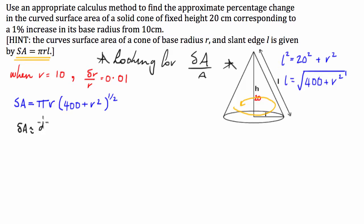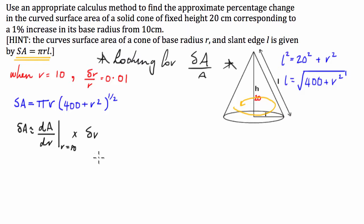Let's find an expression for approximating delta A. We use the incremental or small changes formula, which says delta A can be approximated by the derivative of A with respect to R, evaluated when R equals 10, times delta R. So first of all we need to calculate dA/dR.